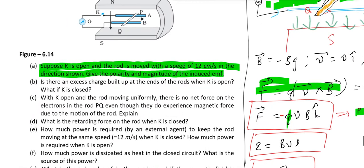Second question: Is there an excess of charge built up at the ends of the rod when K is open? Yes, charges are accumulated at P and Q end. So there is excess of charge at P and Q end.